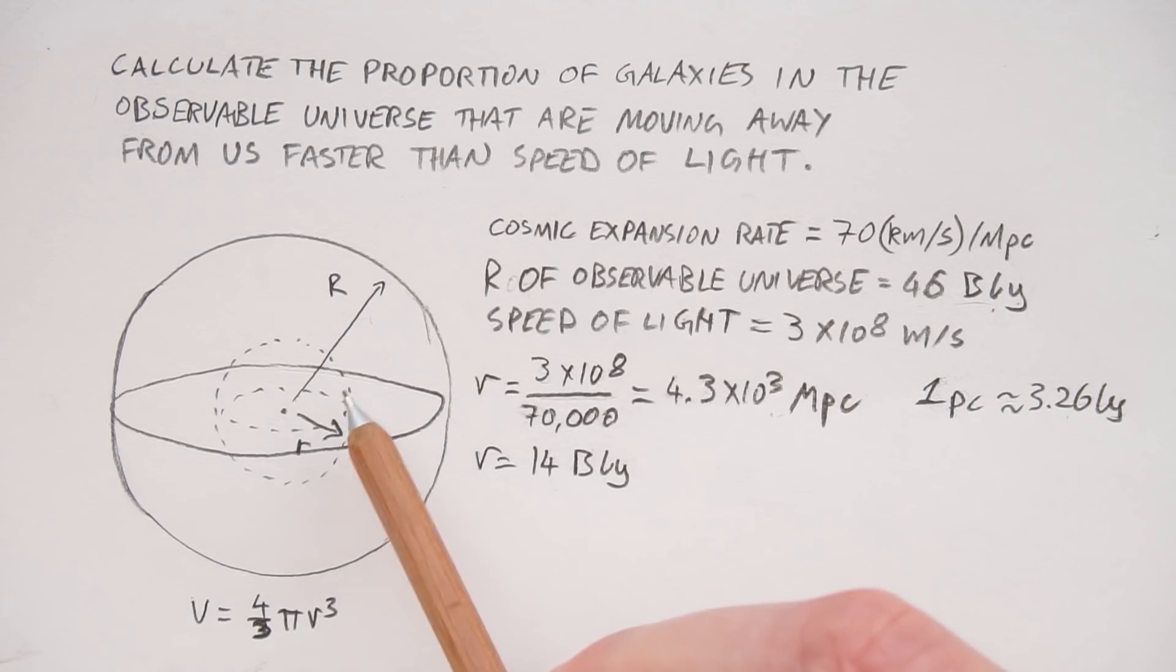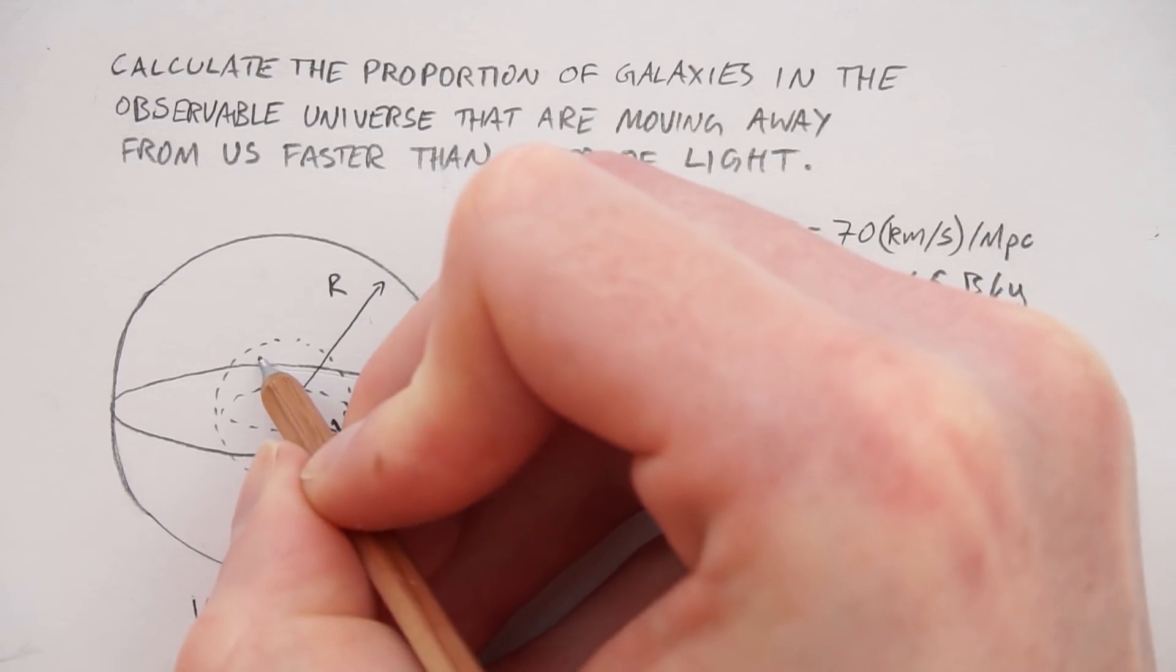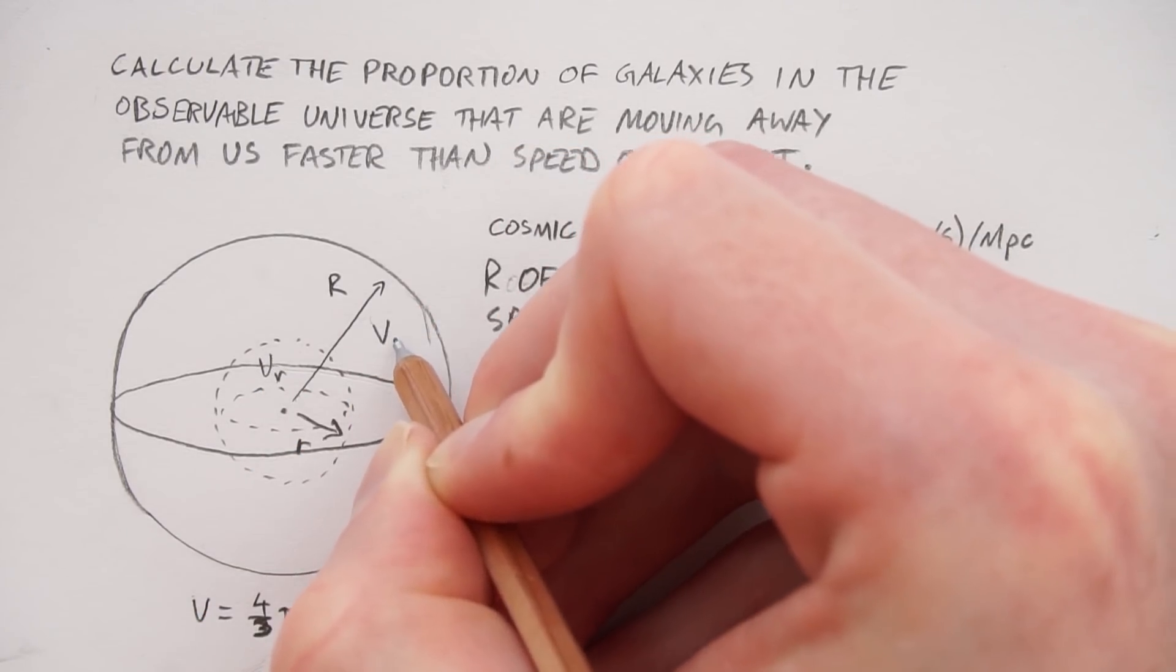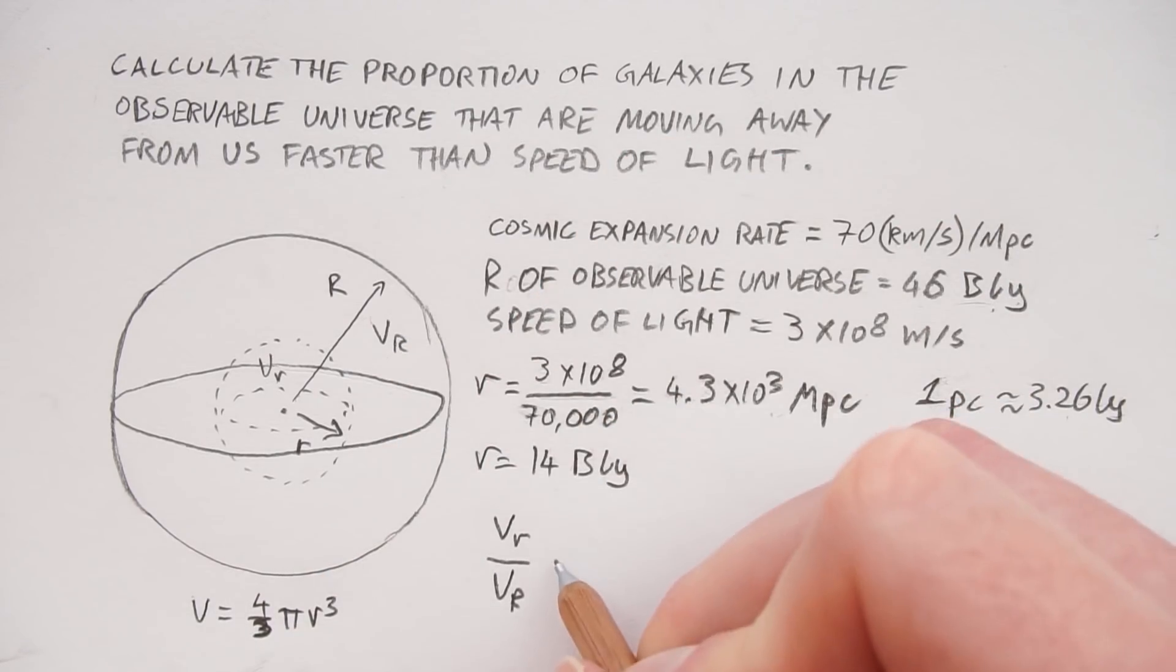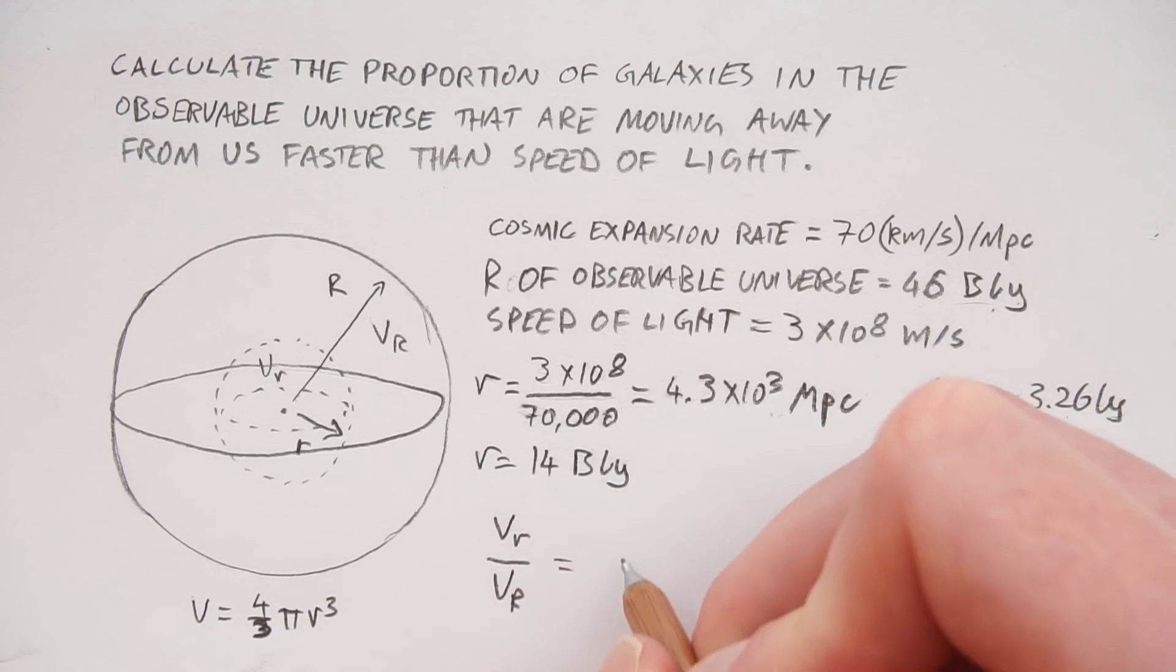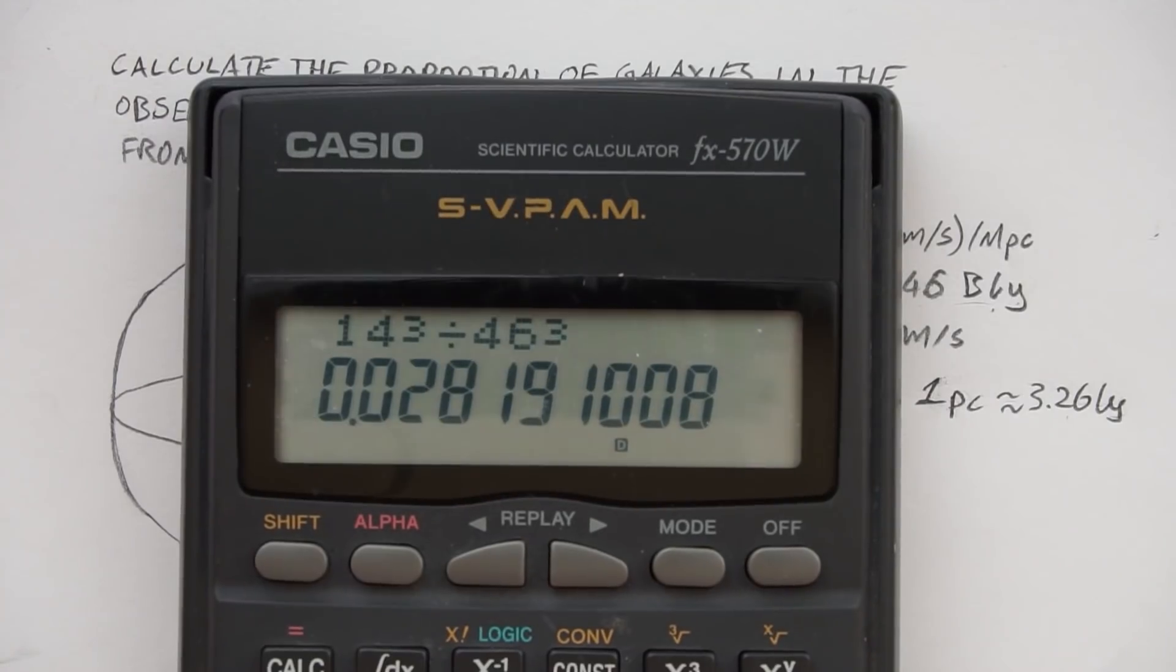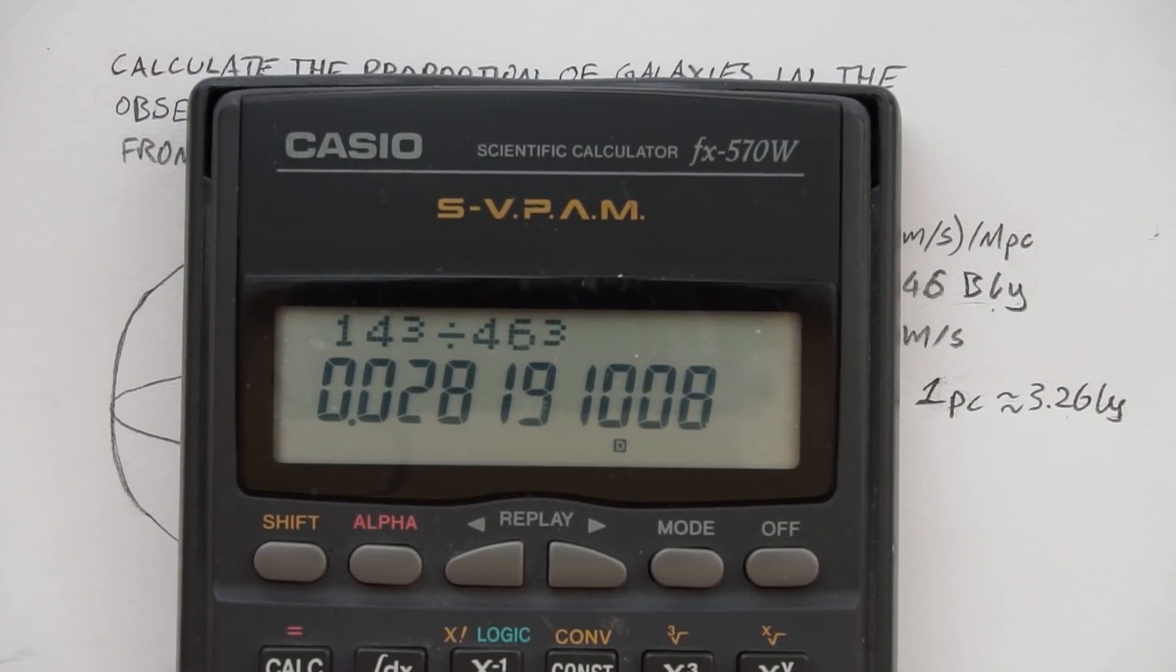So now we can just compare the ratio of the little volume to the big volume. So this will be v little r against v big R. This is v little r, this is v big R. And we don't need to have the 4 over 3 pi because they'll cancel out. So all we have here is 14 cubed divided by 46 cubed, which equals 0.028.